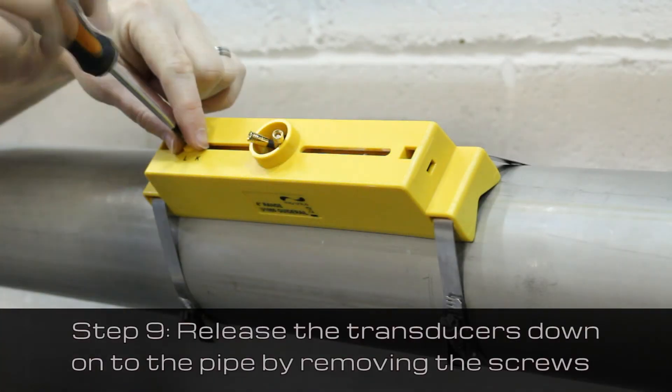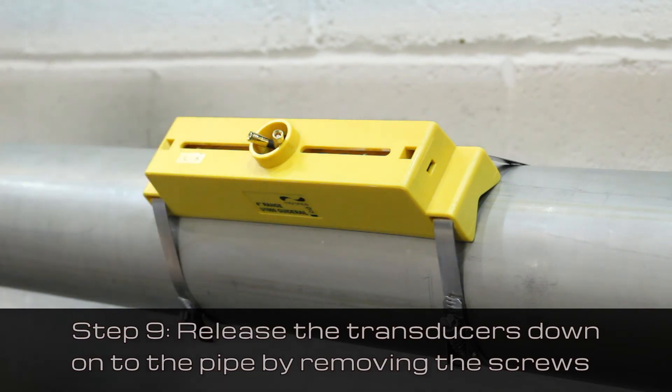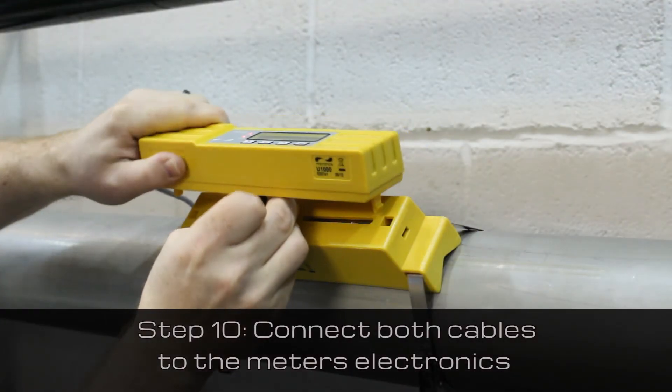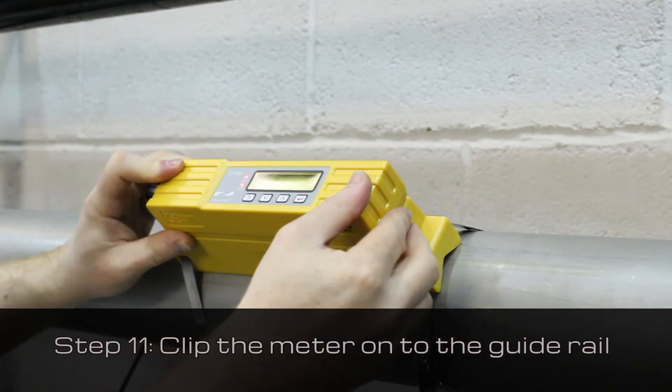Release the transducers down onto the pipe by removing the screws. Then connect both cables to the meter's electronics. The meter will then simply clip on to the guide rail.